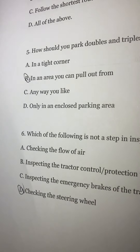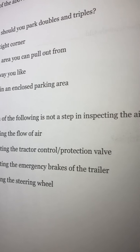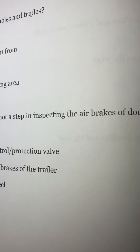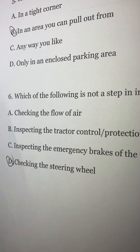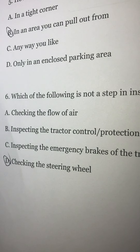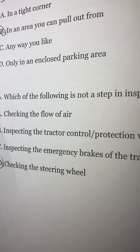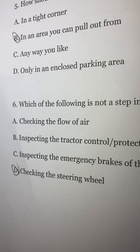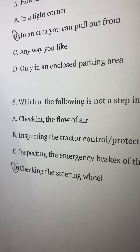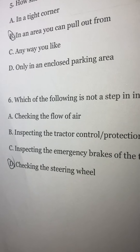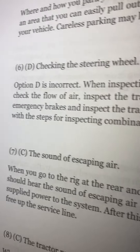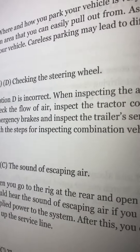Number six: which of the following is not a step in inspecting the air brakes of doubles and triples? A) checking the flow of air, B) inspecting the tractor control/protection valve, C) inspecting the emergency brakes of the trailer, or D) checking the steering wheel. The answer is D, checking the steering wheel.